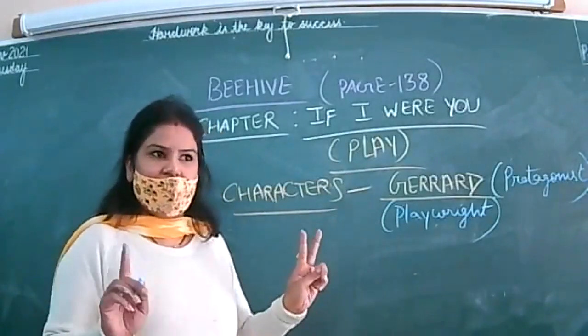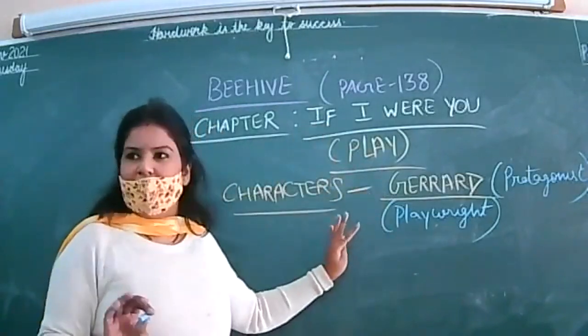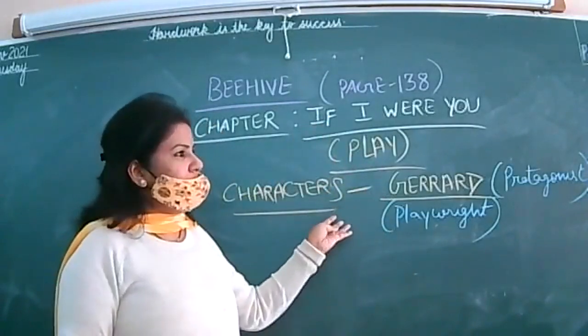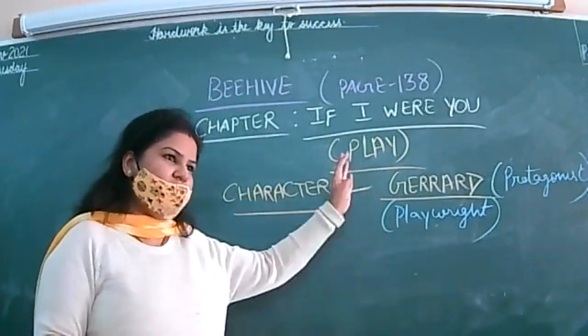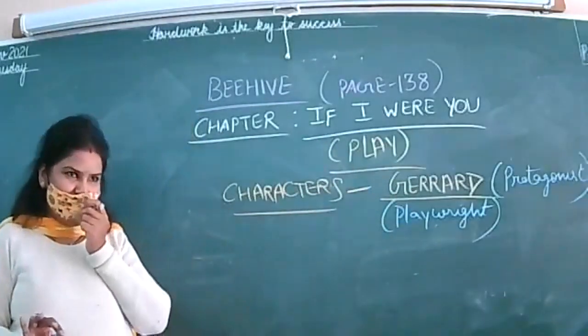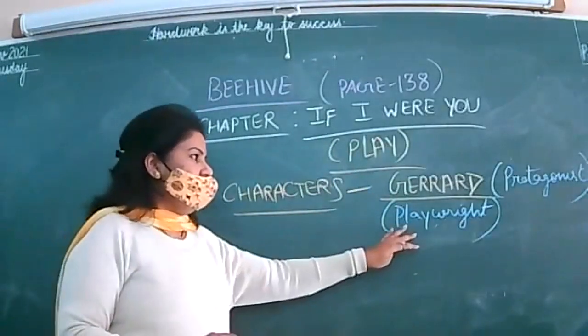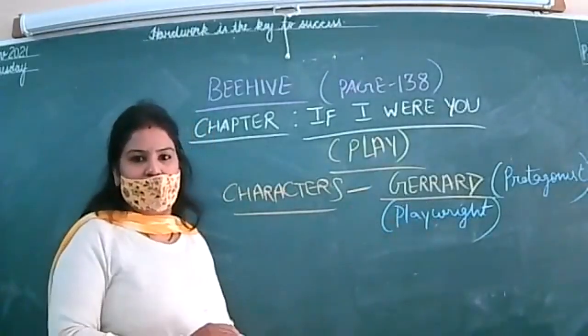Do not get confused. This chapter is in the form of a play only, and Gerrard is playing the role of a playwright. He is the original artist. So he is a playwright in this story. He is the protagonist, main character.